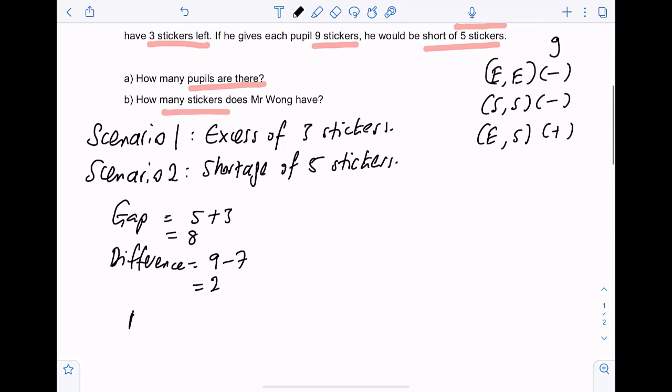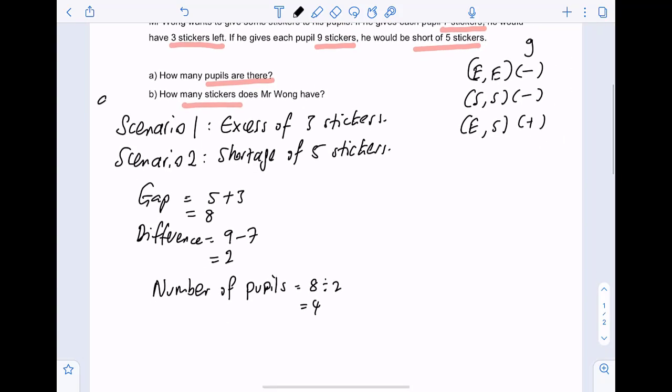And for the last step, we will be able to find the number of pupils. By doing a very simple step, we will just take the gap, divide by the difference, we will get four pupils. This is the answer for part A.